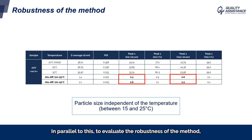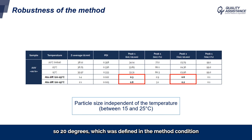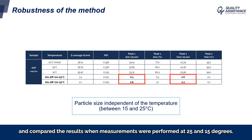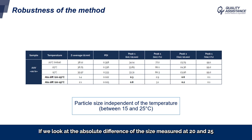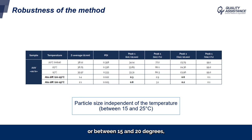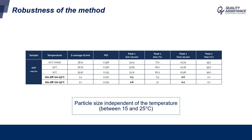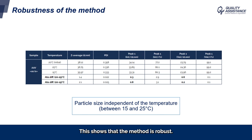In parallel, to evaluate the robustness of the method, we performed the analysis at three temperatures: 20°C, which was defined as the method condition, and compared the results when measurements were performed at 25 and 15°C. Looking at the absolute difference in size measured between 20 and 25°C, or between 15 and 20°C, both by intensity and by volume, we see that this difference is minor and negligible. This shows that the method is robust.